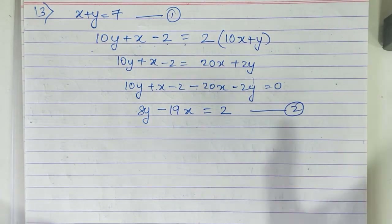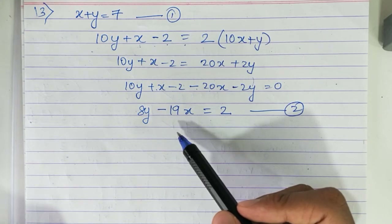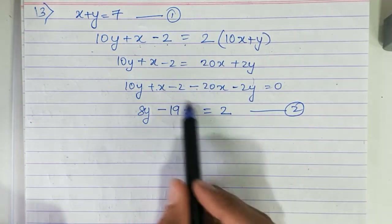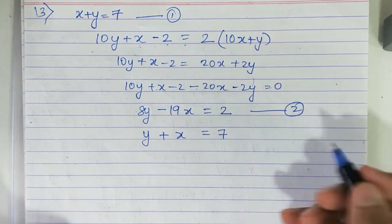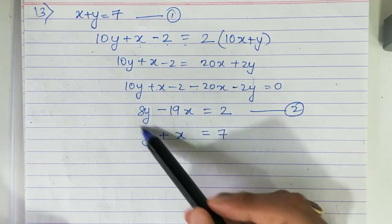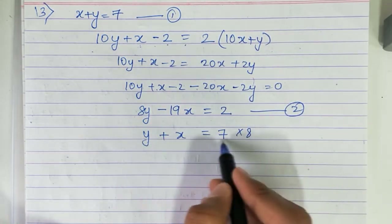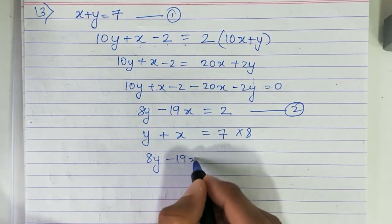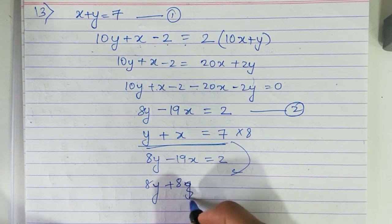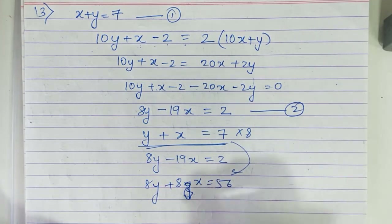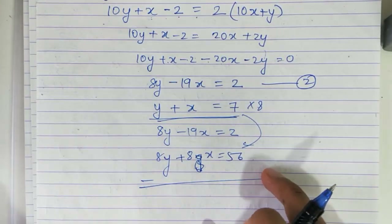Solve these two equations simultaneously. Arrange the equations with x and y terms. To eliminate y, multiply the first equation by 8, giving 8y plus 8x equals 56. Then solve together with the second equation to get the answer. Pause the video and complete this sum.